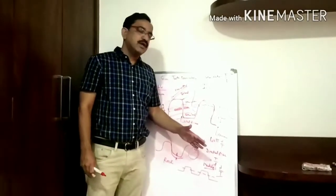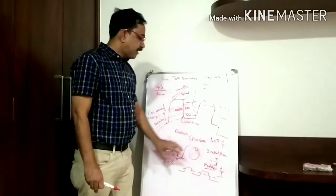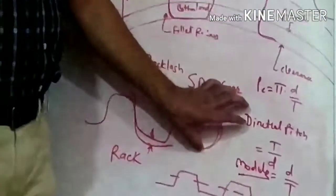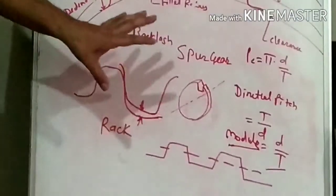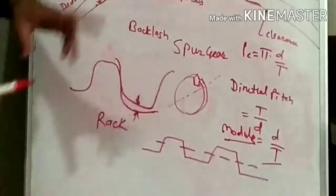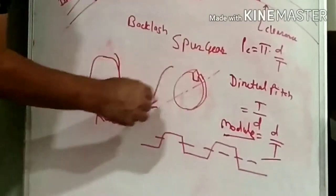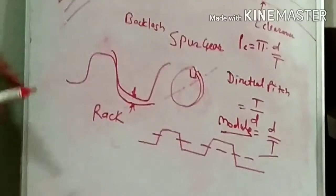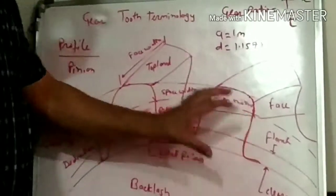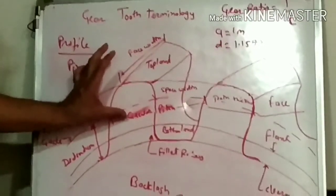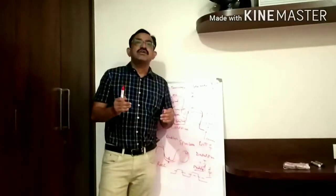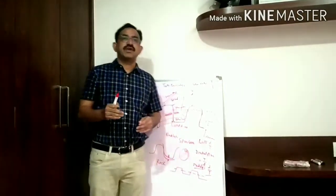So these are all the terms related to gear tooth. Today we learned about spur gears — gears used to transmit power between two parallel shafts where the teeth are cut parallel to the axis of the shaft. We also learned all the terms related to gear tooth. In the next lecture, we will see the working principle of gear. Thank you very much.